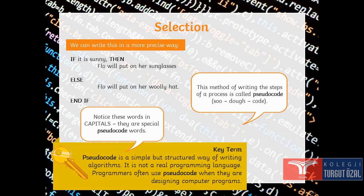This method of writing the steps of a process is called pseudo-code. Remember this. Notice the words that are in capitals. They are special pseudo-code words. Pseudo-code is a simple but structured way of writing algorithm. It is not a real programming language. Programmers often use pseudo-code when they are designing computer programs.